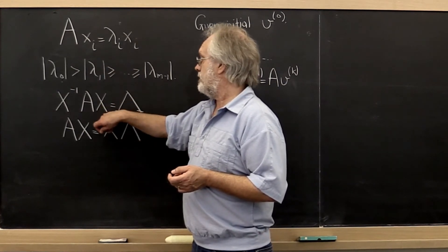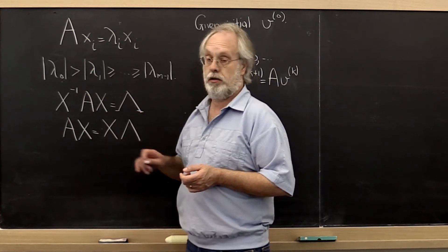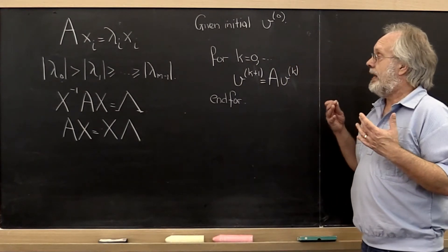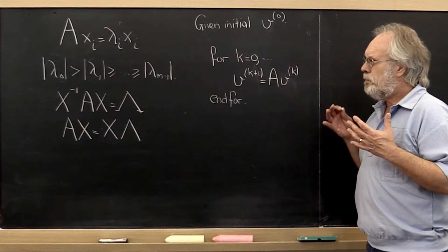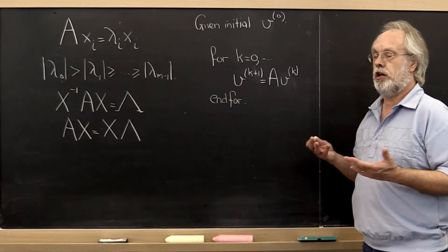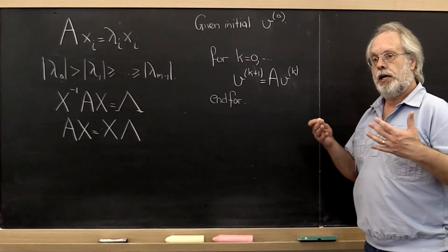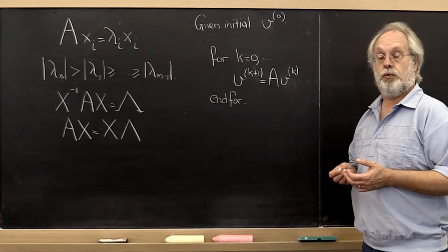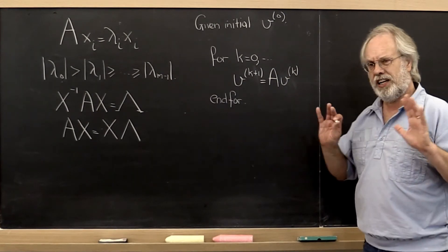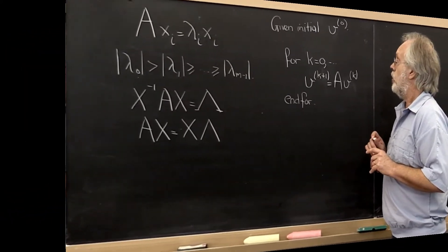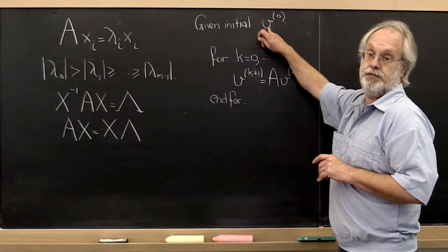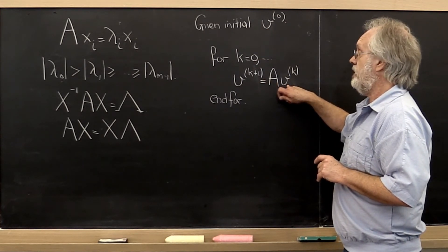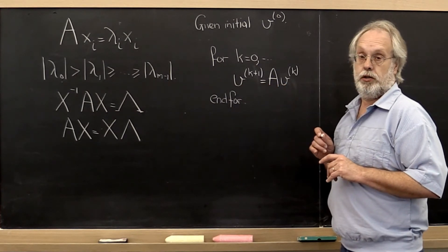We can write that either like that or like this. Now an algorithm that doesn't compute the eigenvector associated with the largest eigenvalue, but that converges to — gets arbitrarily close to — a vector in the correct direction, can be given very simply. All we do is we take an initial vector v and we hit that vector with the matrix A repeatedly, every time creating a new vector.